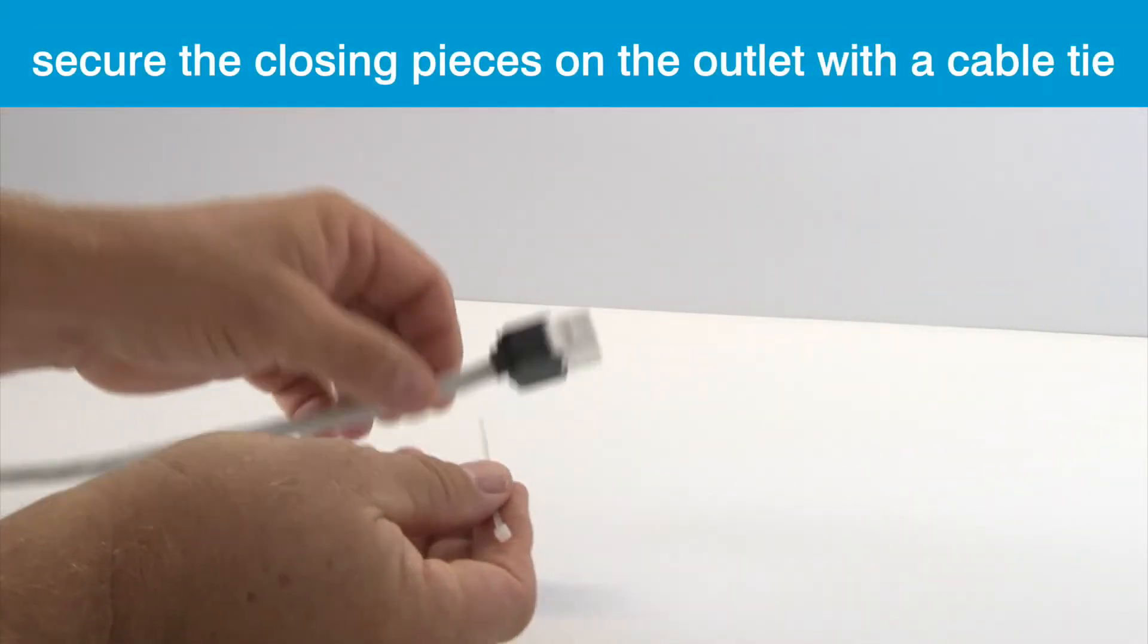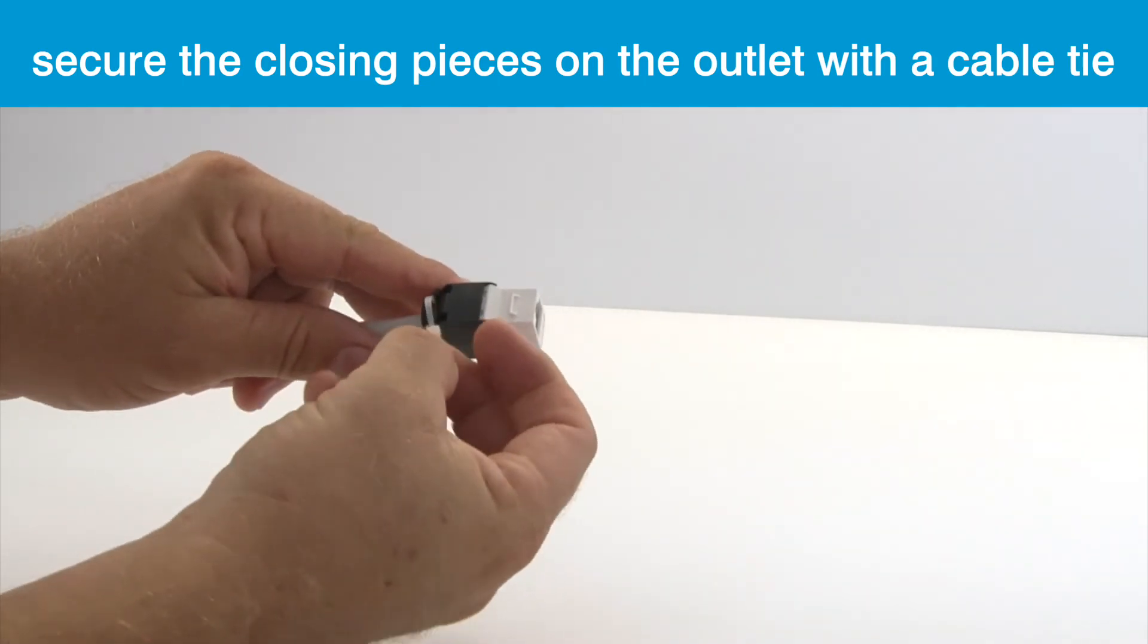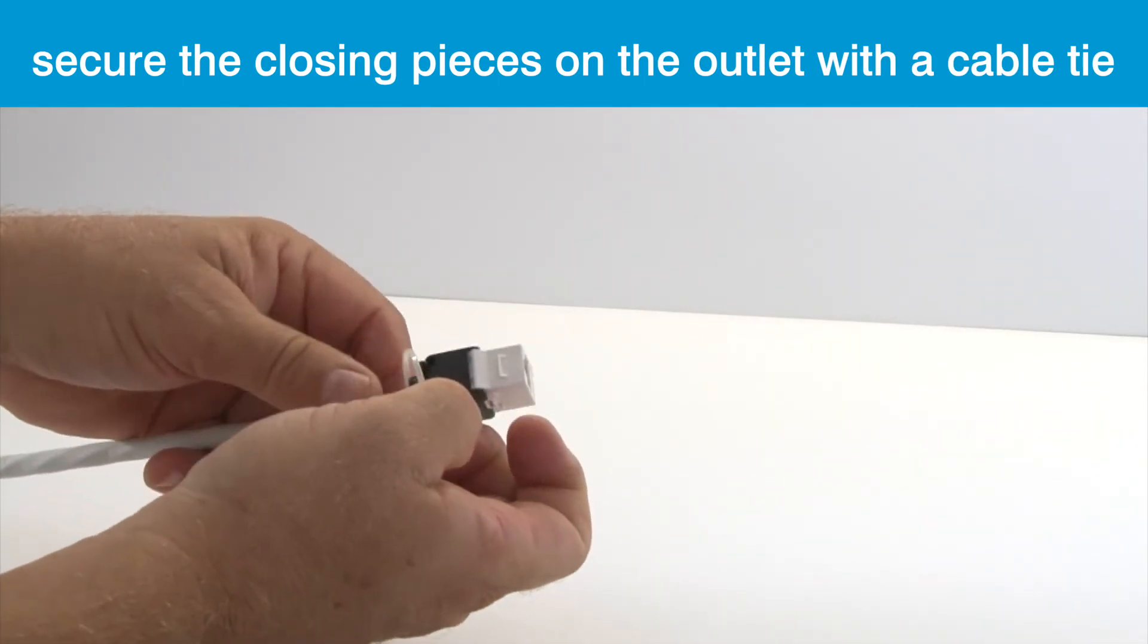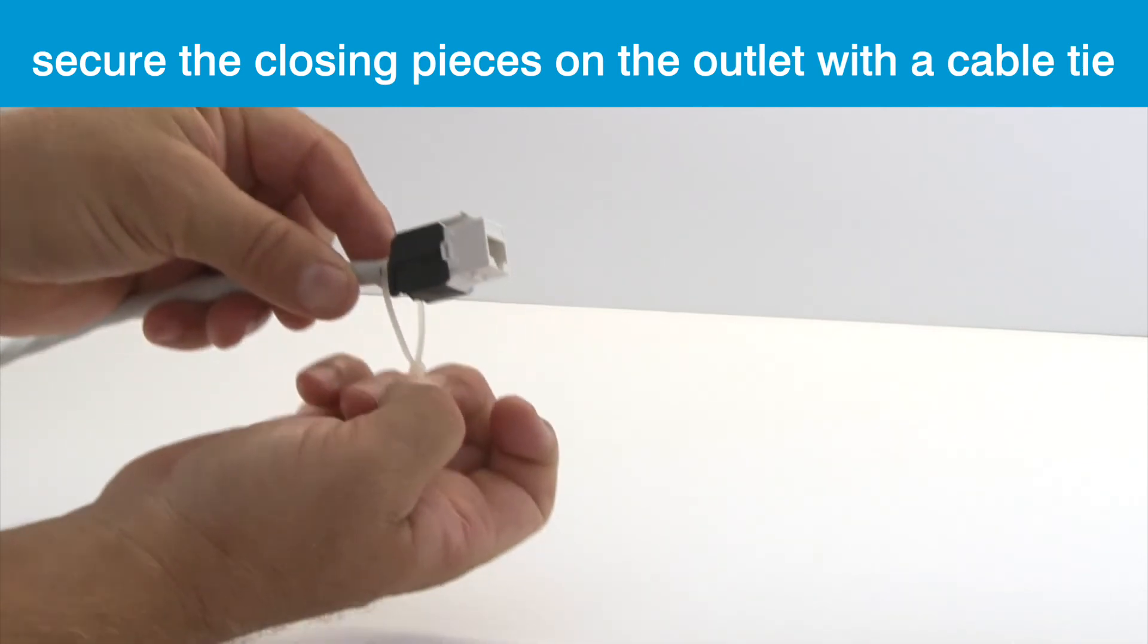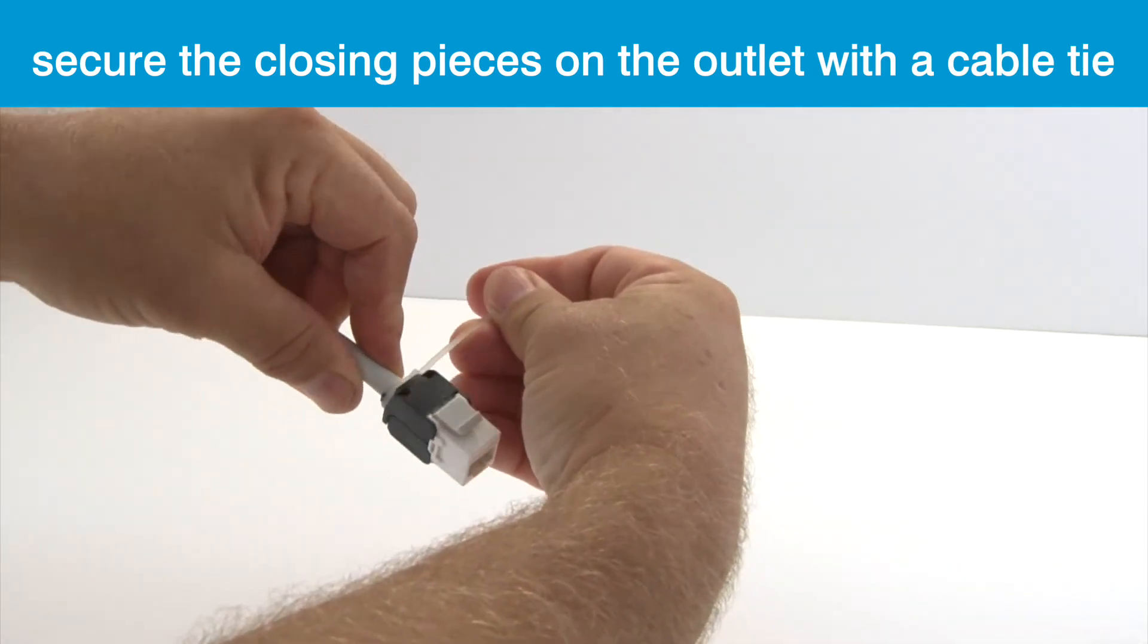For either method of termination, it's a good idea to further secure the closing pieces of the outlet using a cable tie around the base. The cable tie goes around the hard plastic rather than the cable, so it's safe to use in this way.